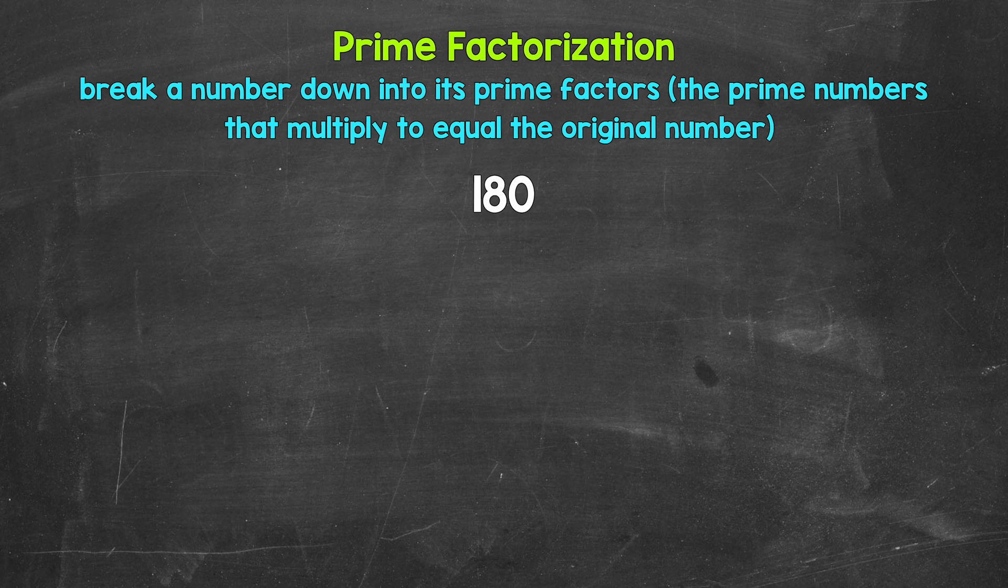Taking a look at 180, we need to start breaking this down by thinking of two factors, two numbers that multiply to give us 180. Well, 3 and 60 are factors. 3 times 60 equals 180. So let's break 180 down into 3 and 60.